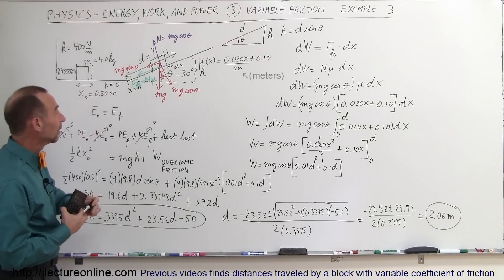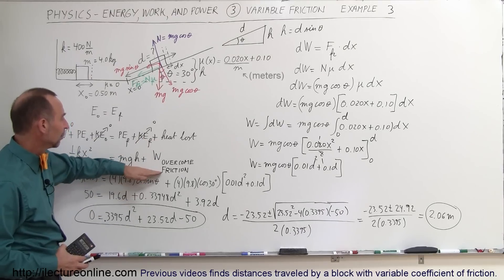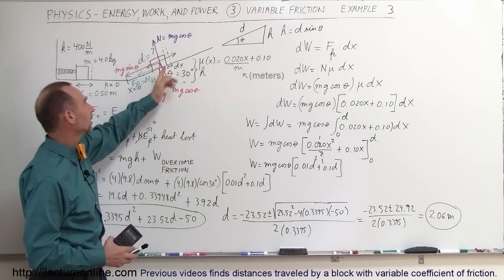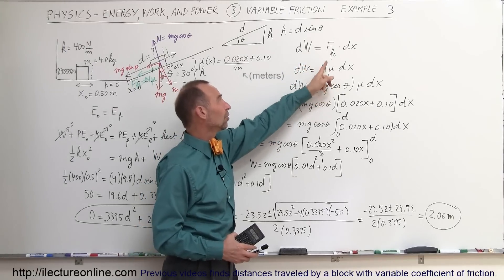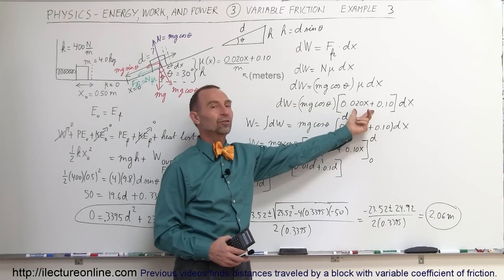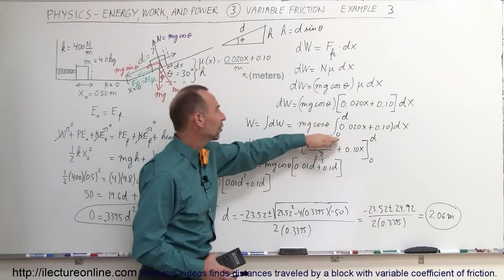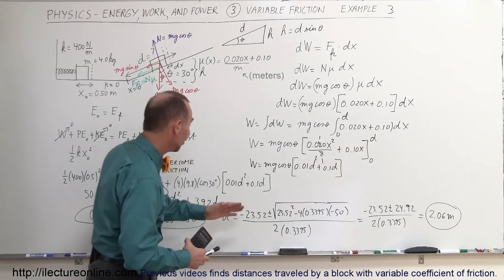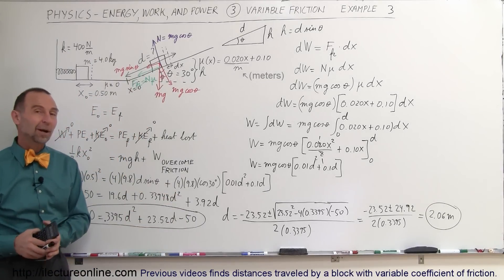The block travels just slightly more than 2 meters up the incline before coming to rest. The key to this problem is finding the work done to overcome friction: by taking an infinitesimal displacement dx along the incline, the work dW equals the normal force times mu times dx. Since mu is a variable, we integrate from 0 to d, which introduces d as an unknown and results in a quadratic equation that we then solve.